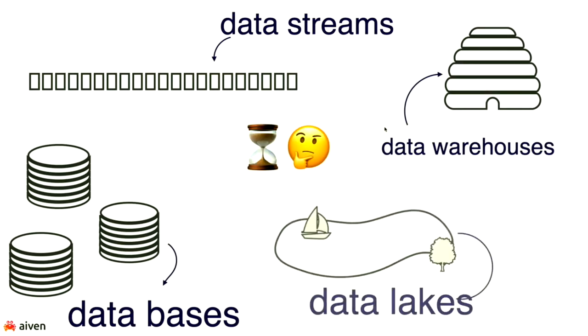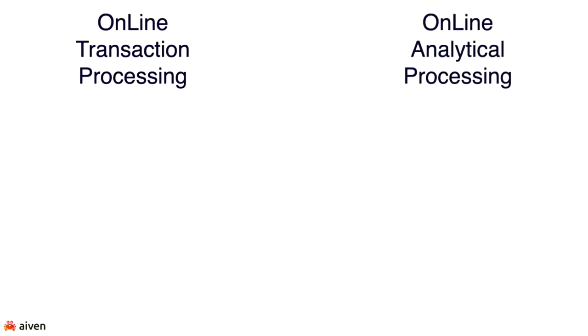We've all heard the terms: data warehouse, data lake, database — these mean different things to different people. My favourite follow-up question when anyone says they have a data warehouse is what do you think that means? Answers range from an actual data warehouse to running it in Postgres to having S3. Where does ClickHouse fit? At Ivan we love Postgres — it was our first service — but Postgres is not the solution for analytics due to fundamental differences in how these things work.